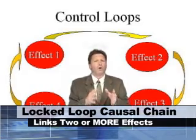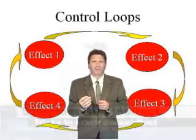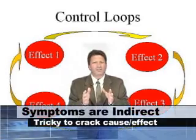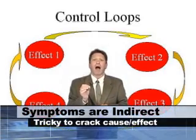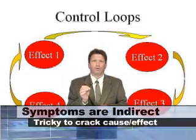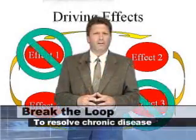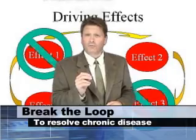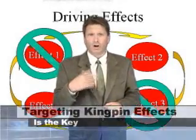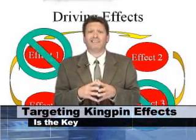These causal loops only indirectly drive symptoms. This indirection makes it tricky and sometimes impossible to identify actionable control loop elements. Resolving chronic diseases always breaks a control loop. Discovering and targeting the causal or kingpin loop elements is key.